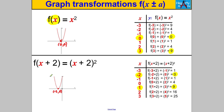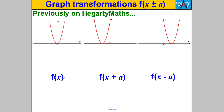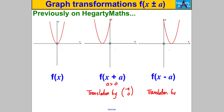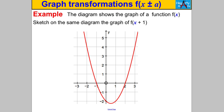Here's the summary: given an original function f(x), f(x+a) where a is a positive number is a translation by (-a, 0) — it moves to the left by a units. And f(x-a) is a translation by (a, 0) — it moves in the positive x direction, to the right by a units. Let's try some questions.